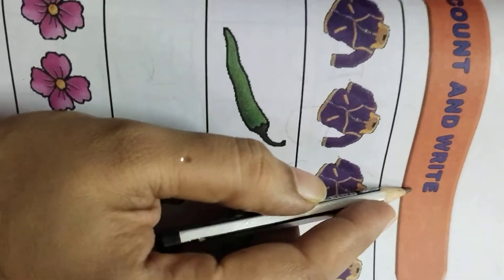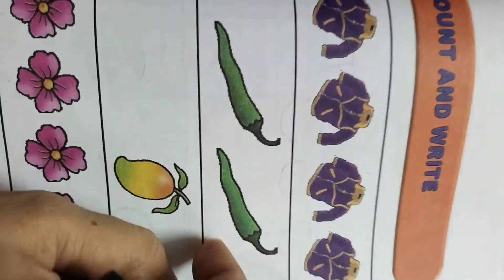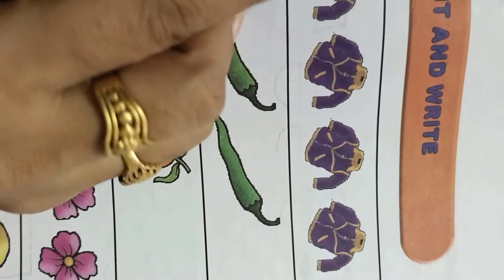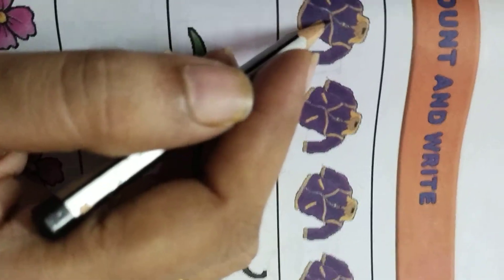Today we will do count and write. We have given some pictures. Look at this box. There are shapes in here. Check it. Count it.